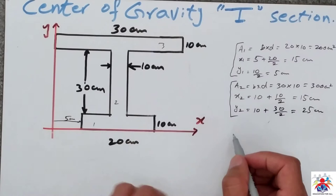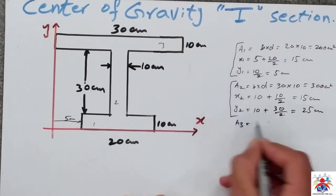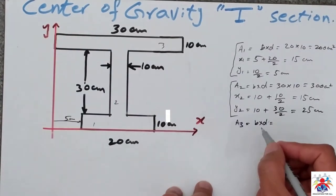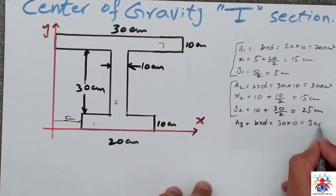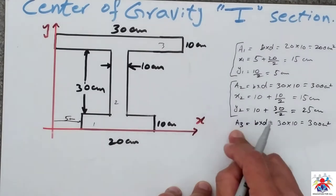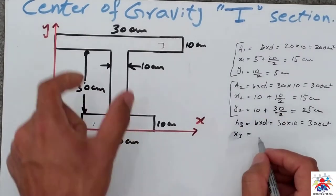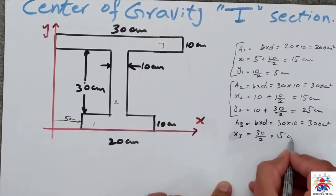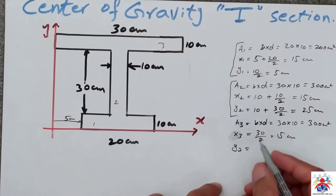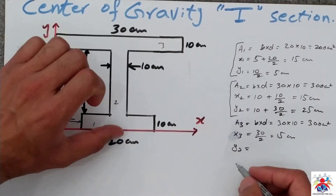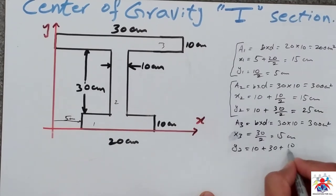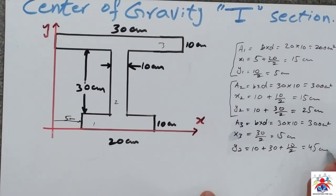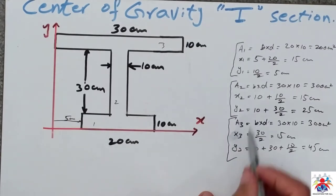Now section three — area three is b multiplied by d, so 30 multiplied by 10 equals 300 square centimeters. x3 is 30 divided by 2, which is 15 centimeters. y3 is counted from the bottom red line to the middle of section 3: 10 plus 30 plus 10 divided by 2 equals 45 centimeters.